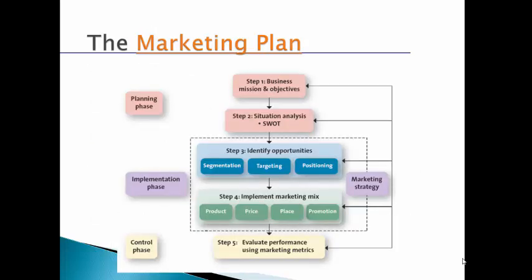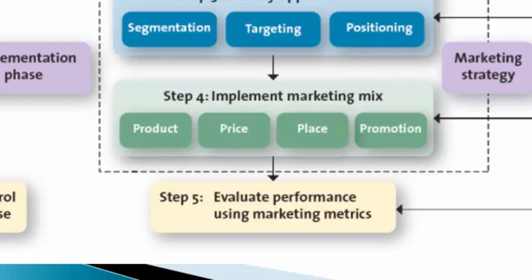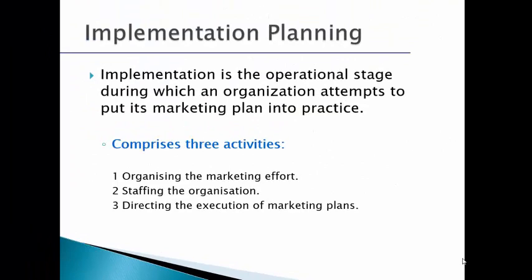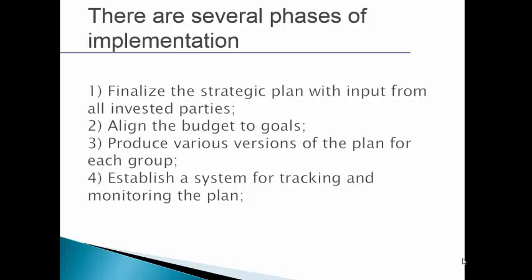Let's wrap up the course content. We've worked through steps 1 through 4 - the implementation of the marketing mix - and now we're getting into implementation planning and evaluating performance using marketing metrics. Implementation planning by definition is the operational stage during which an organization attempts to put the marketing plan into practice. There are three general activities: organizing the marketing effort, staffing the organization, and directing the execution of the marketing plan.